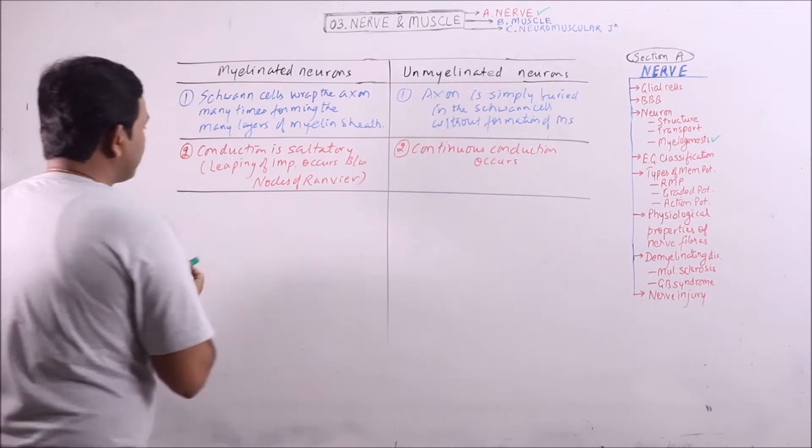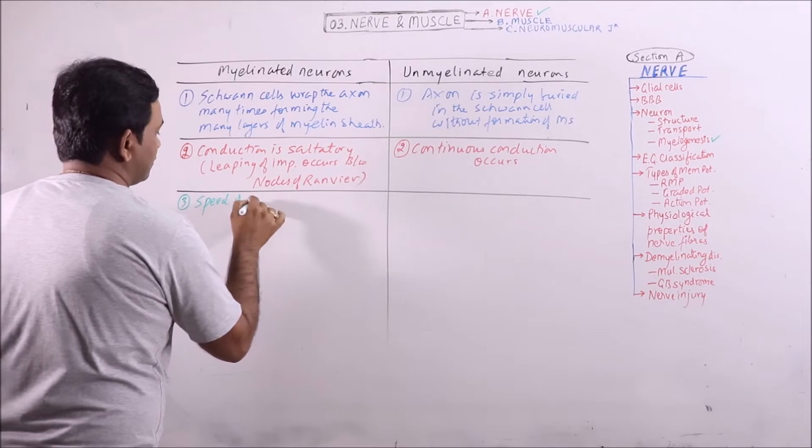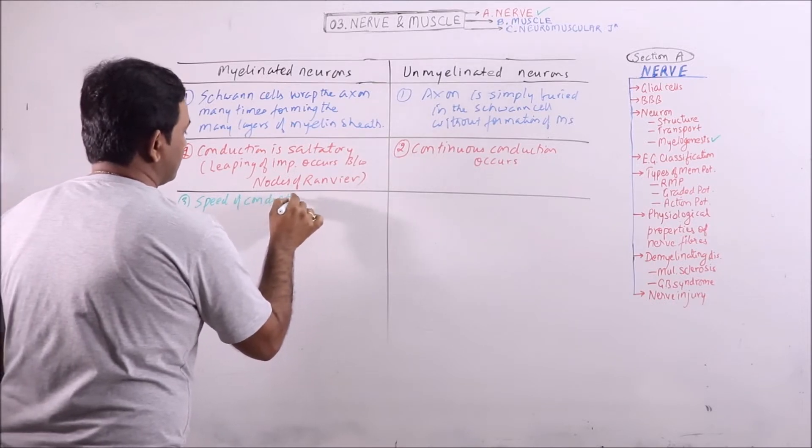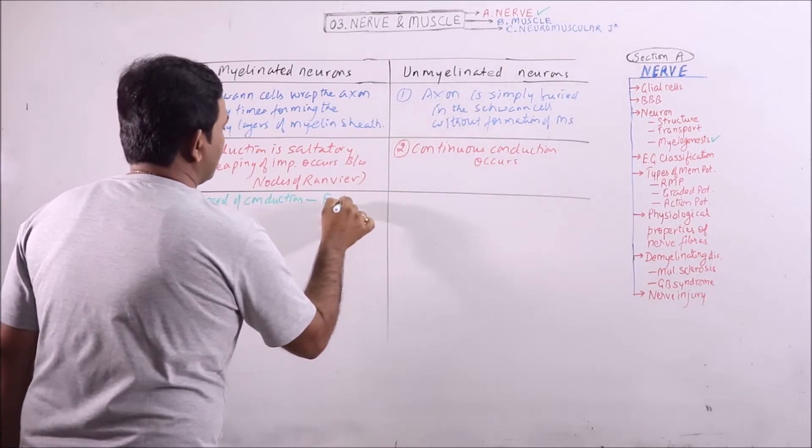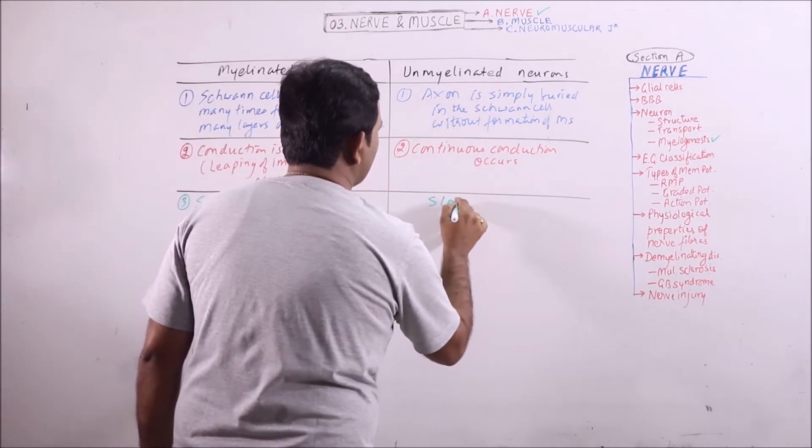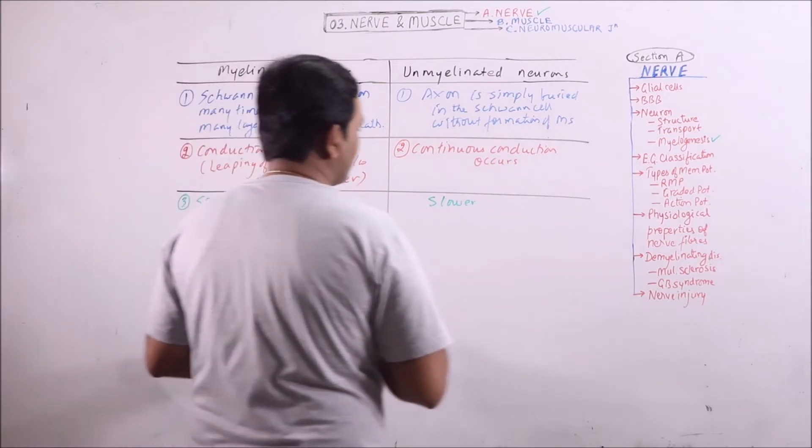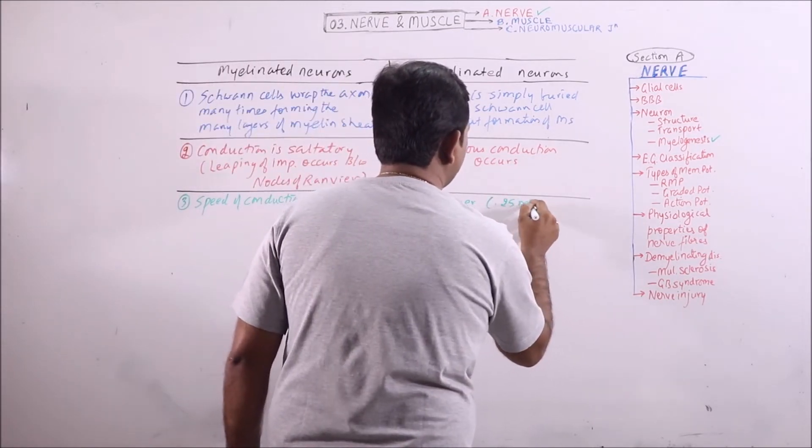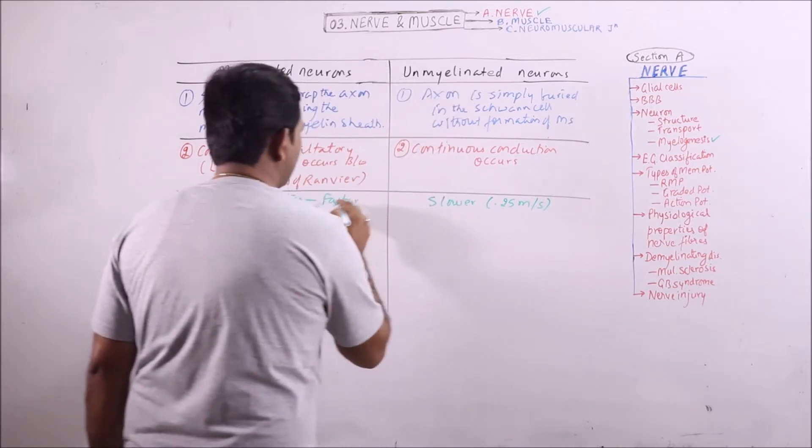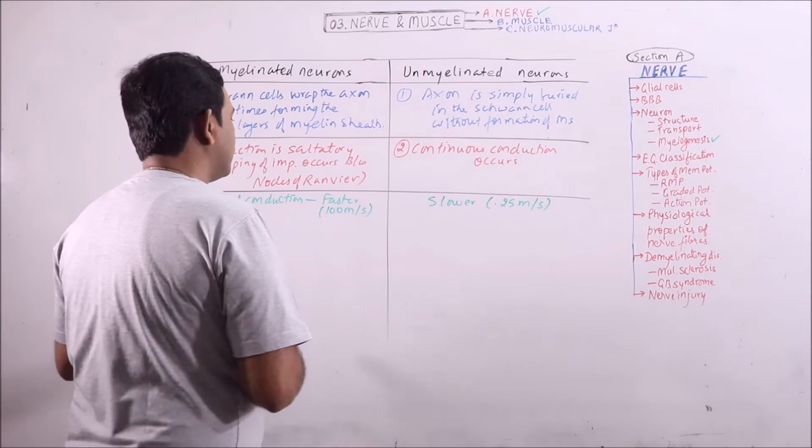Now, speed of conduction. It is faster in myelinated neurons and slower in unmyelinated neurons. It may be around 0.25 meters per second. Here, it may increase up to 100 meters per second.